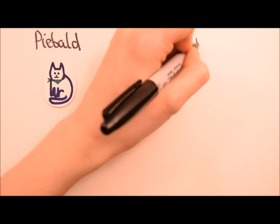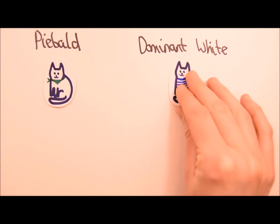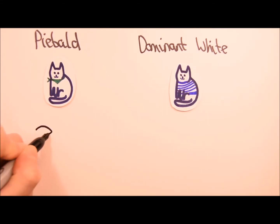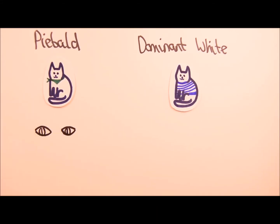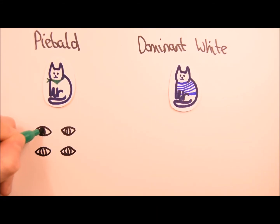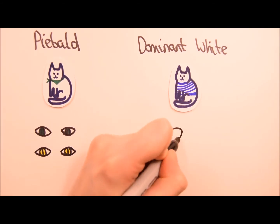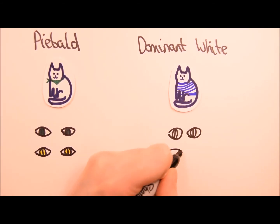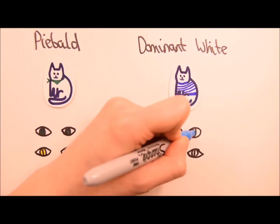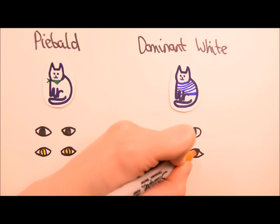So there are two genes that can make a cat white, but you only have to look at their eye colour to distinguish their genotypes. A cat with the piebald allele will have green or yellow eyes, whereas a cat with the dominant white allele will have blue or orange eyes.